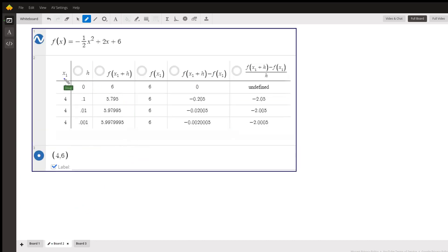Here's how you could do it on Desmos. Here's h - notice that when h is 0, the difference quotient is undefined because we would be dividing by 0. But when h is 0.1, f(4.1) is 5.795, f(4) is 6. If we subtract this minus this, we get change in y, and if we divide that change in y by h, we get -2.05. If we do that all the way through, these values are getting closer and closer to -2.